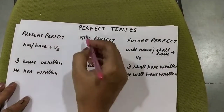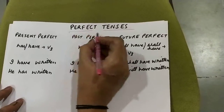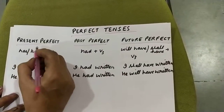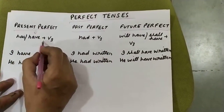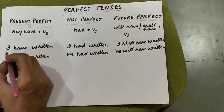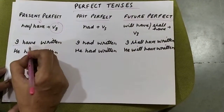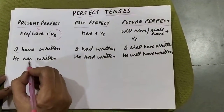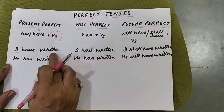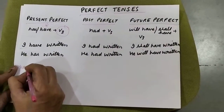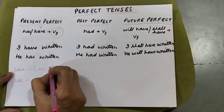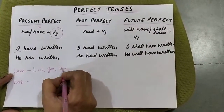Now we will move on to perfect tenses. In perfect tenses we have present perfect, past perfect, and future perfect. In present perfect, we use 'has' or 'have' plus the third form of the verb — V3 means third form of the verb. With I, we, you, they, we use 'have', and with he, she, it, we use 'has'. So 'I have written' or 'he has written'. Have is used with I, we, you, they and plural subjects.